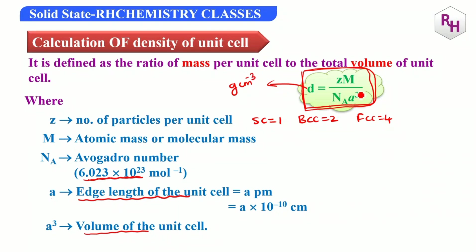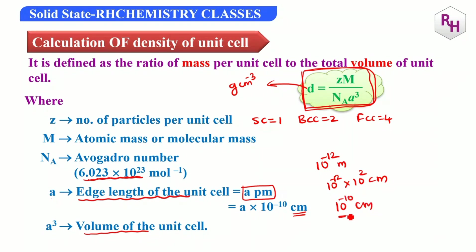So, grams per cm cube means the A value must be in centimeters. If you have the value in meters or picometers, you need to convert it. The atomic mass is generally in grams, but we need to convert it. The molecular mass has the unit gram per mole.